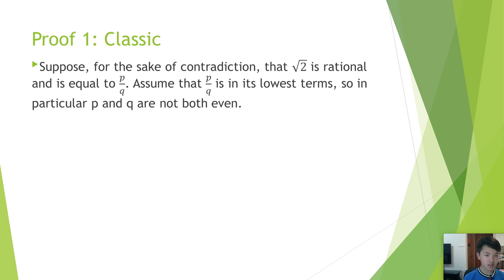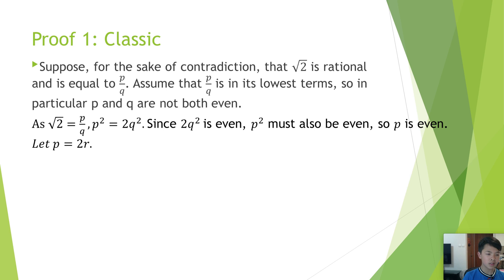Proof 1. Suppose, for the sake of contradiction, that the square root of 2 is rational and is equal to p over q. Assume that p over q is in its lowest terms, so in particular p and q are not both even. As the square root of 2 is equal to p over q, p squared equals 2q squared. Since 2q squared is even, p squared must also be even, so p is even.